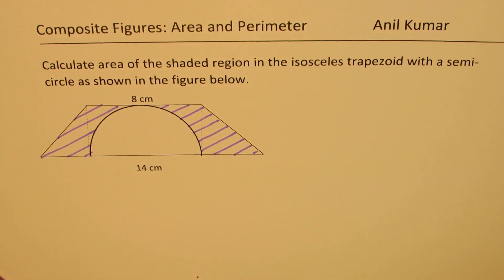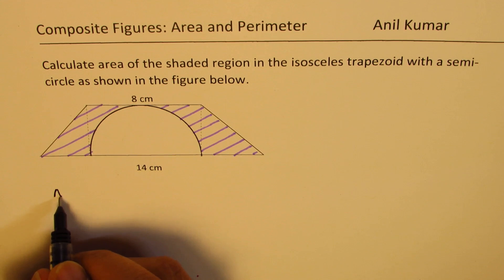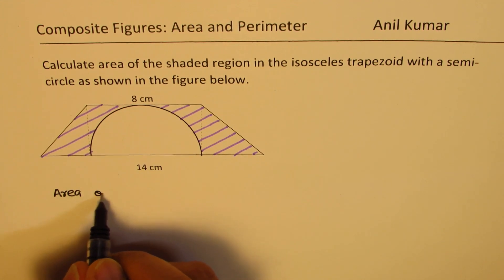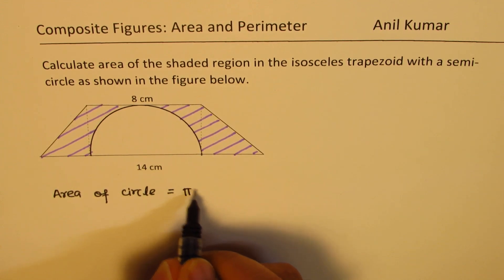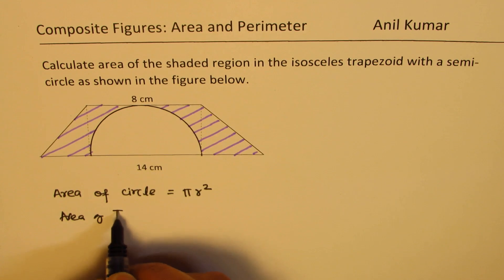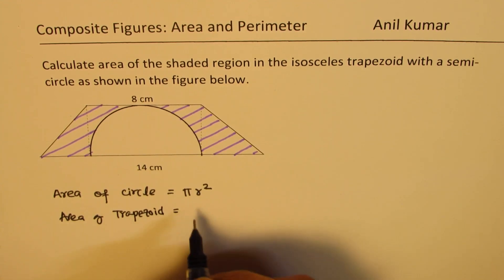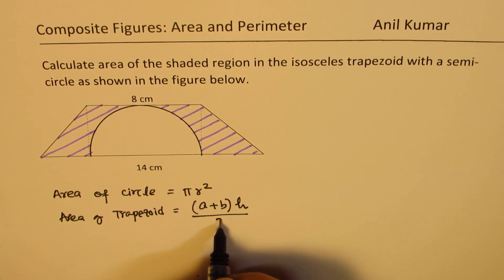Now two formulas which you need to remember to find the area is area of a circle is πr² and area of trapezoid is (a+b)h/2,